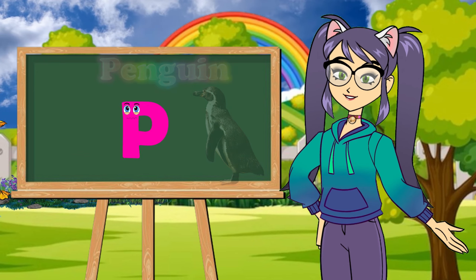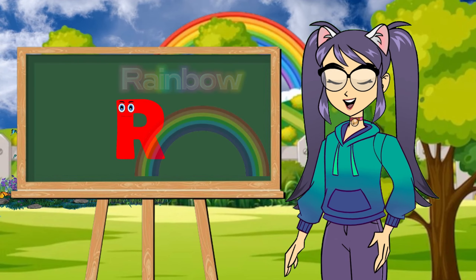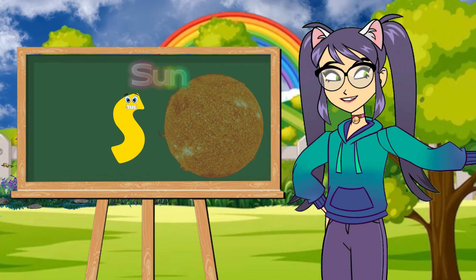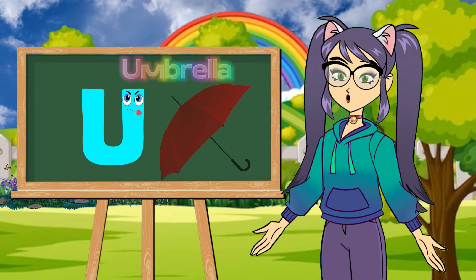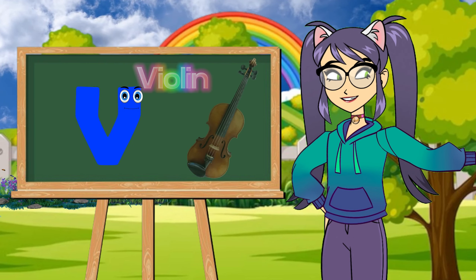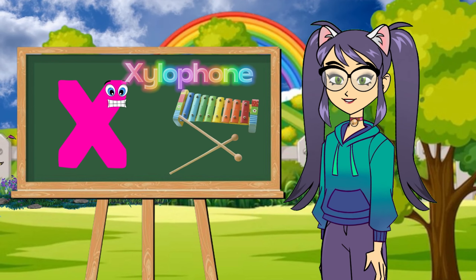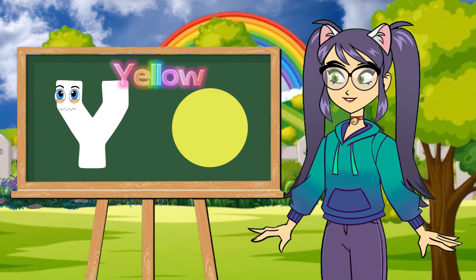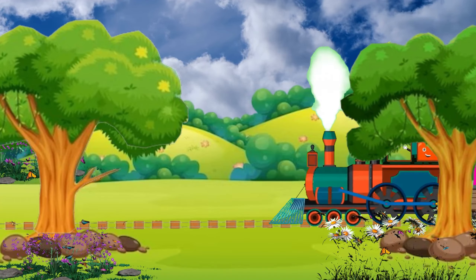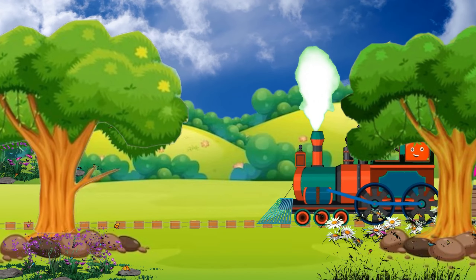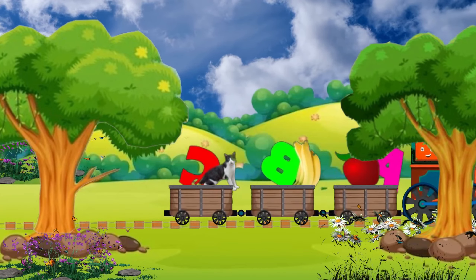M is for monkey. N is for nest. O is for octopus. O, octopus. P is for penguin. P, P, penguin. Q is for queen. Q, queen. R is for rainbow. R, R, rainbow. S is for sun. S, S, sun. T is for turtle. T, T, turtle. U is for umbrella. U, umbrella. V is for violin. V, violin. W is for whale. X is for xylophone. K, xylophone. Y is for yellow. Y, Y, yellow. Z is for zebra. Z, Z, Z, zebra.